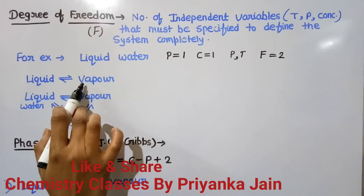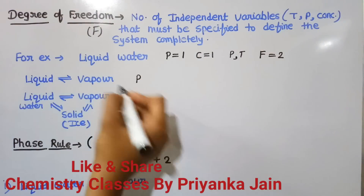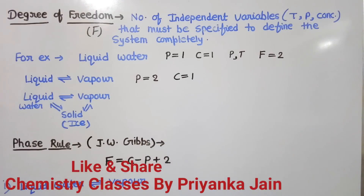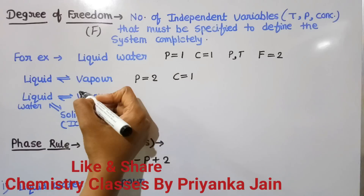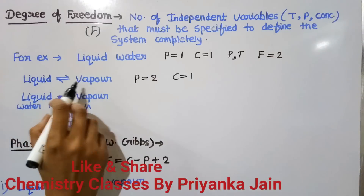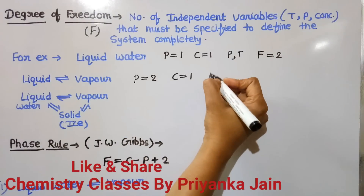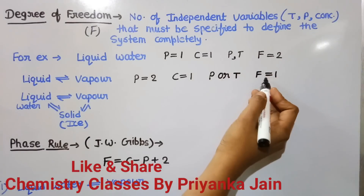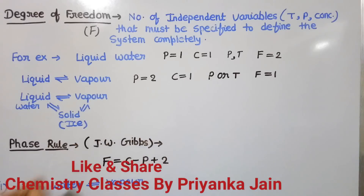Now consider another equilibrium: when liquid water and water vapors are in equilibrium. Here the phases are two (liquid and vapor) and the component is one, H₂O. If we vary the pressure, we must keep the temperature constant — if we vary both, the system is disturbed and it will remain either in vapor or liquid state with no equilibrium. So we can vary only one variable — either pressure or temperature. The degree of freedom is one, and the system is univariant.